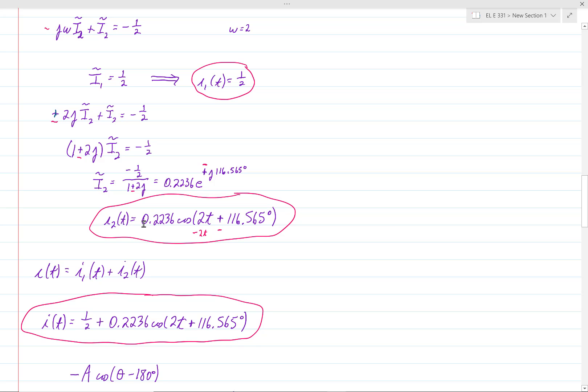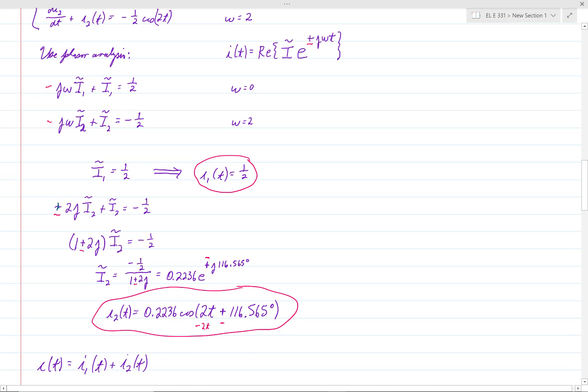So then, i2 of t would be equal to 0.2236 cosine, but notice that since in this case we're talking about i of t is the real part of i tilde e to the minus j omega t, then instead of having cosine of positive 2t plus 116.565 degrees, we would have cosine and then we'd have minus 2t here. And then we would use this minus 116.565 degrees.